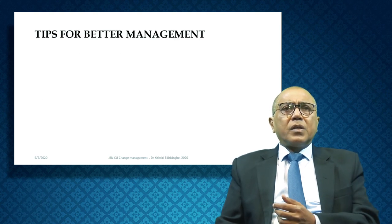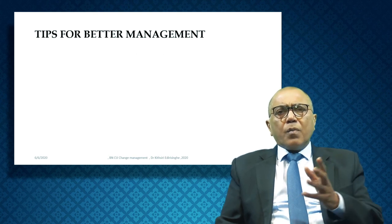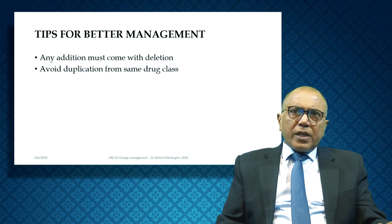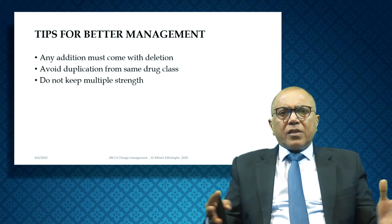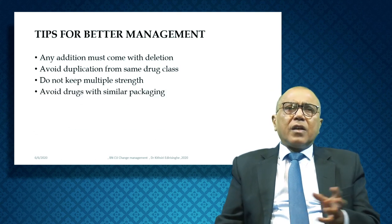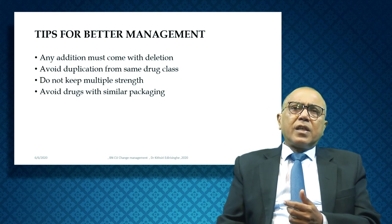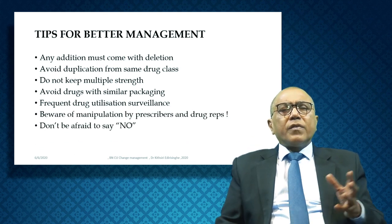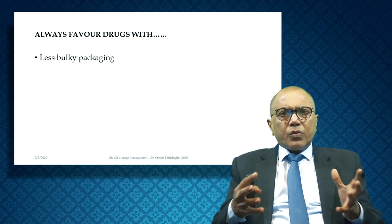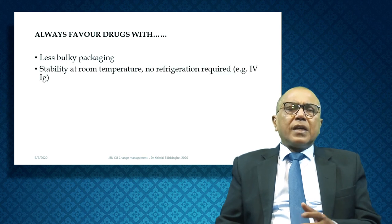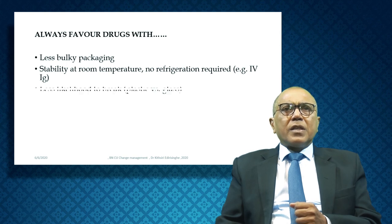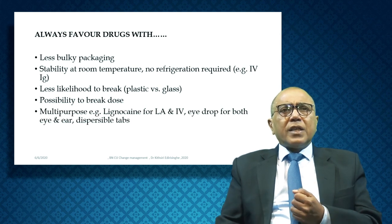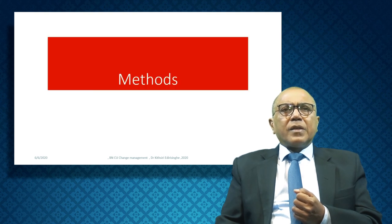Tips for better management of a formulary: any addition must come with a deletion. Avoid duplication within the same drug class. Do not keep multiple strengths — keep the minimum strength; you can break it and give it if needed. Avoid drugs with similar packaging to reduce risk of giving the wrong drug. Frequent drug utilization and surveillance is very important. Be aware of manipulation by prescribers and don't be afraid to say no. Get less bulky packages that are easier to store. Prefer drugs stabilized at room temperature, with possibility of break dosage, multipurpose use, and patient-friendly packing.